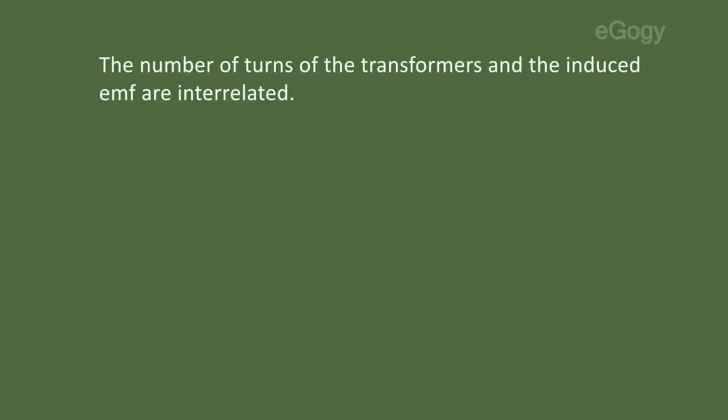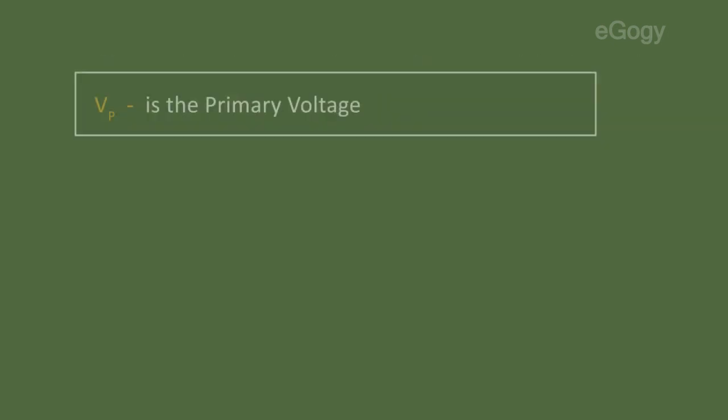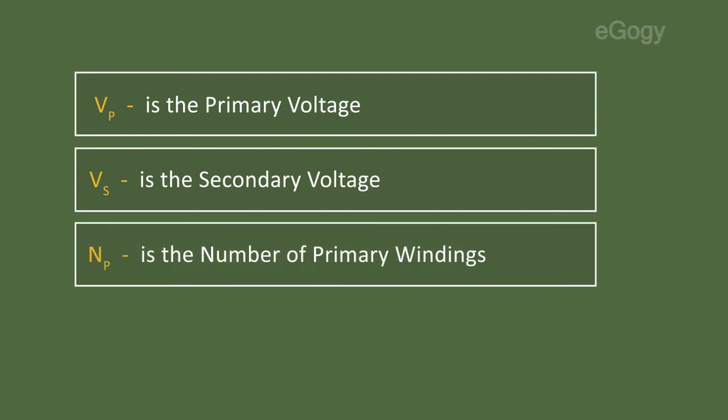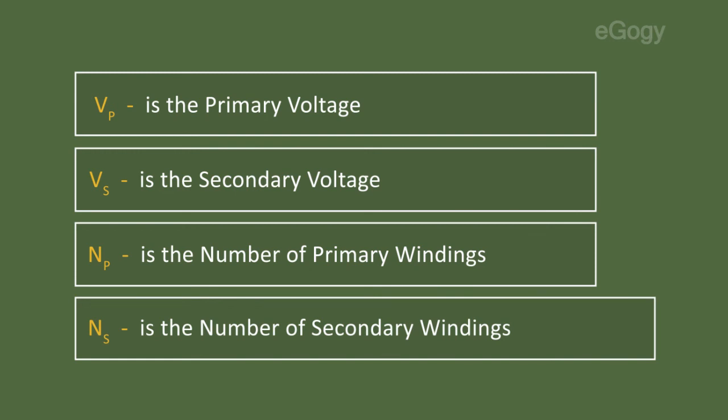The number of turns of the transformers and the induced EMF are interrelated. Mathematically, it can be written as Vs by Vp equals Ns by Np. Vp is the primary voltage, Vs is the secondary voltage, Np is the number of primary windings, and Ns is the number of secondary windings.